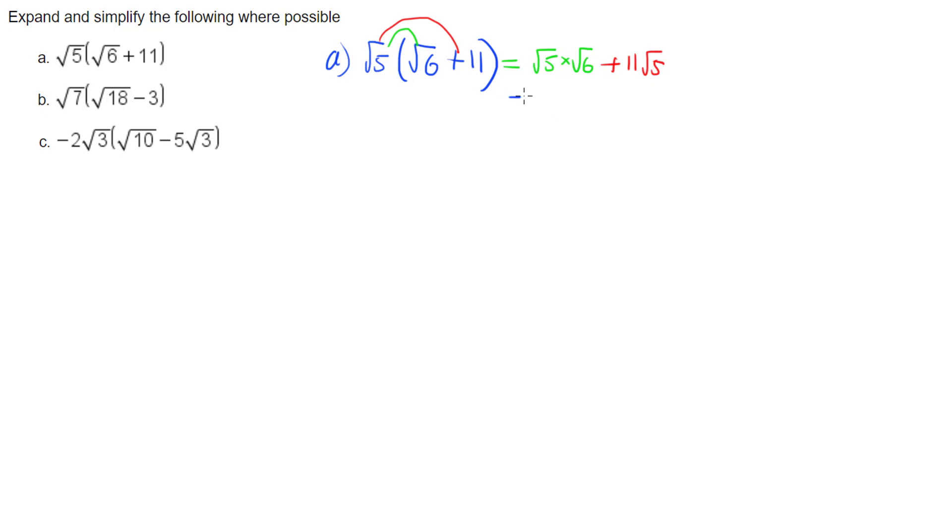I can then perform the multiplication by multiplying the numbers underneath the square roots. Root 5 times root 6 is root 30, plus 11 root 5. I can't simplify root 30 or 11 root 5, so the square root of 5 times the square root of 6 plus 11 is root 30 plus 11 root 5.